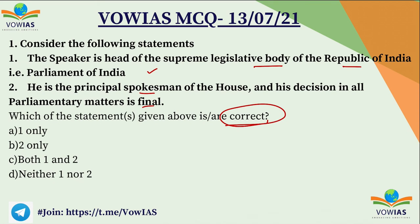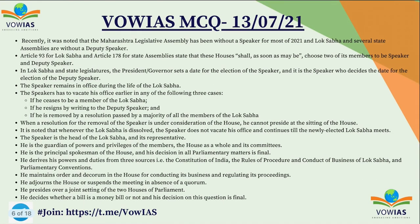Looking at both statements carefully: the first statement says the Speaker is head of the supreme legislative body, that means Parliament — but this is a wrong statement, because the Speaker is head of the Lok Sabha, not the upper house. The upper house, Rajya Sabha, is headed by the Chairman, who is none other than the Vice President of India. The second statement — he is the principal spokesperson of the house and his decisions in all parliamentary matters is final — this is correct. So B, two only, is the correct answer.